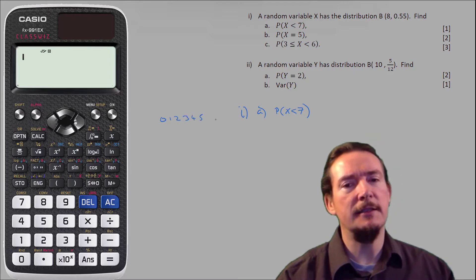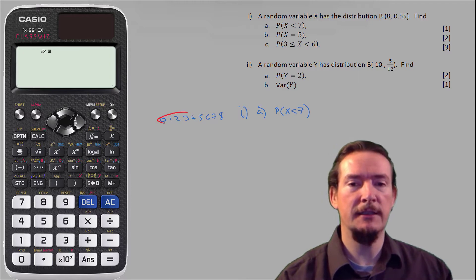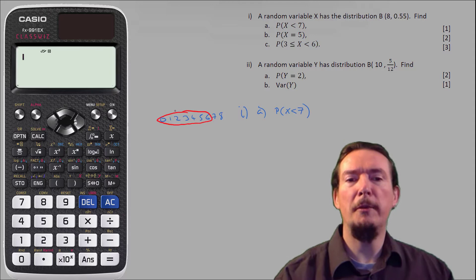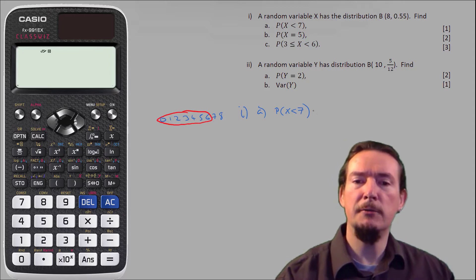So x being less than 7 actually means it can take the values of 0 through 6. So the probability that x is less than 7 is equal to the probability of x less than or equal to 6.